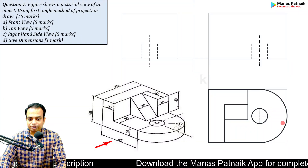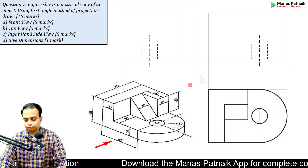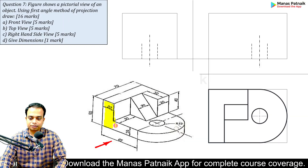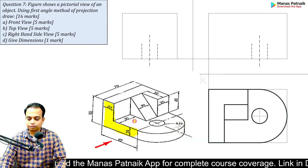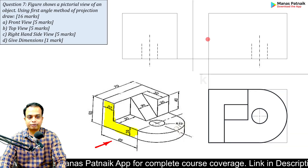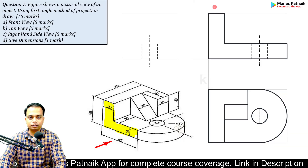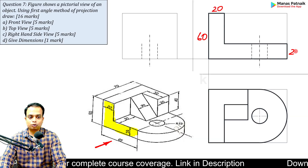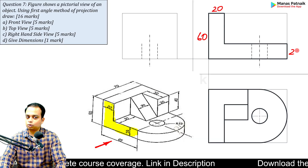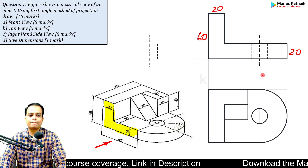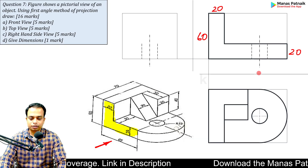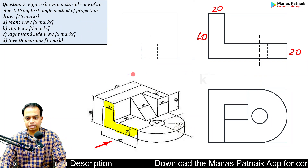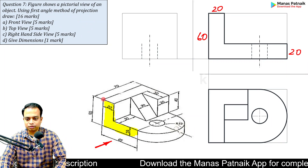Now the front view. First you make the L-shape. If you watch, this is 20, this is 20, and this is 60. We're almost done with the front view outline.